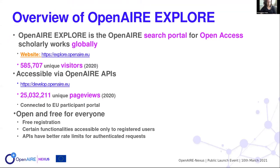If we want to make an overview, OpenAIRE Explore has two parts. The first is the OpenAIRE search portal for open access scholarly works globally. Last year we had a little bit more than half a million unique users. The other part is the OpenAIRE APIs under develop.openair.eu, where last year we had 25 million unique page views.